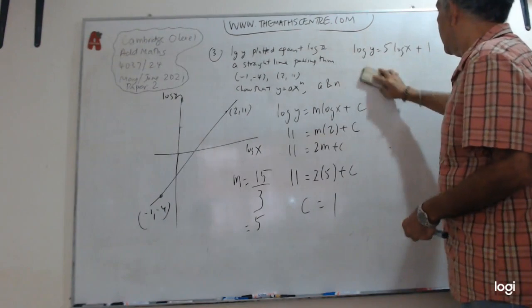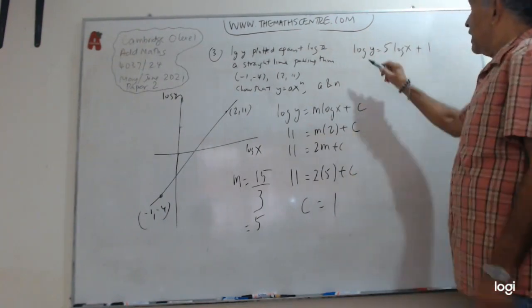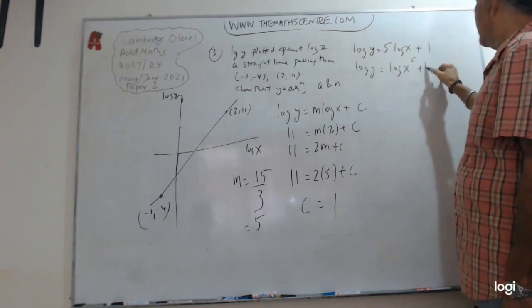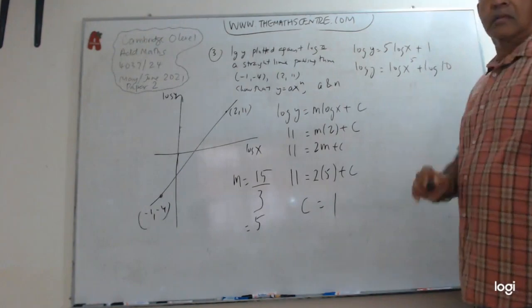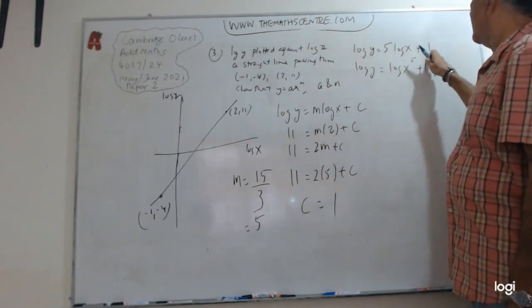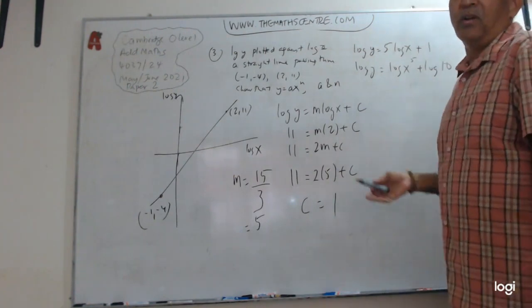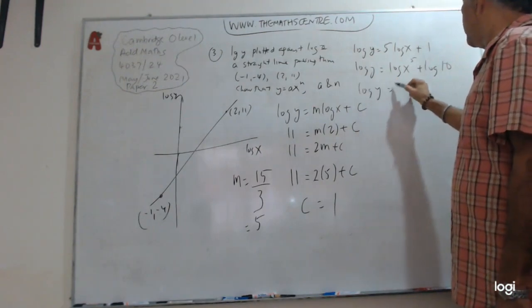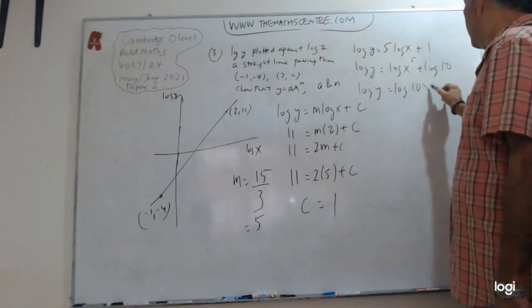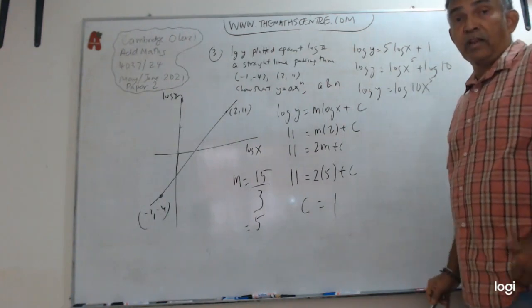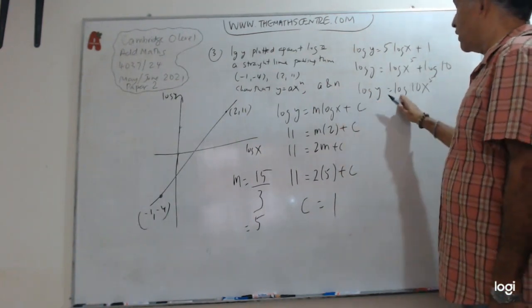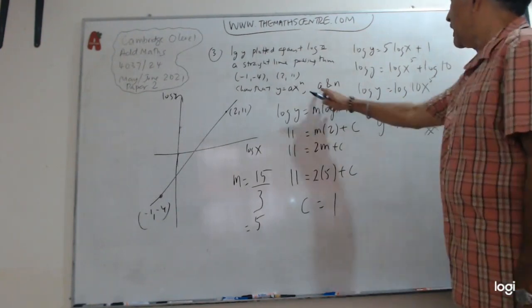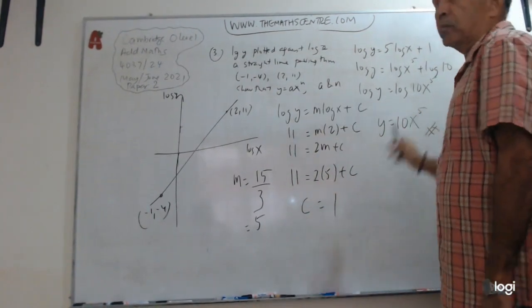Log Y equals to... I've factored the 5 out. I've replaced 1 with log of 10, because we're dealing all with base 10. So now I have log of Y will be log of... Log M plus log N is log MN. Now we've got log here, we have log here, drop the logs, and I have Y equals to, so now my A here is 10 and my N here will be 5. And we're done.